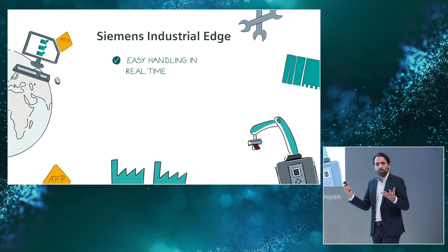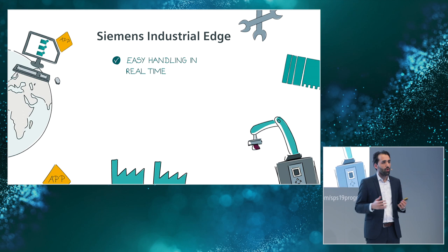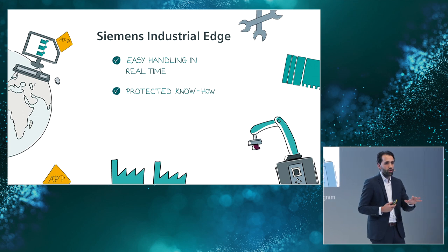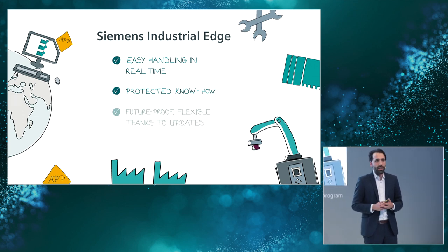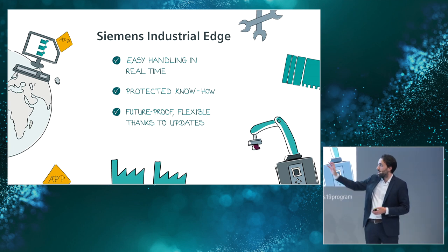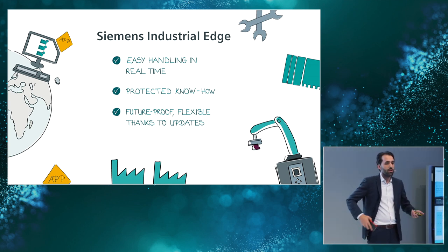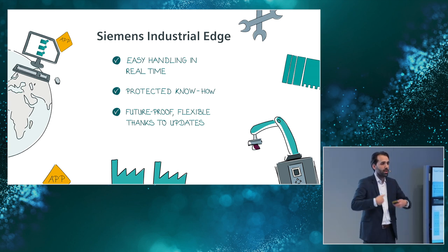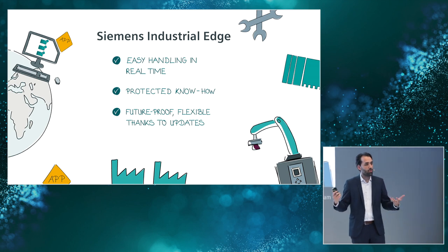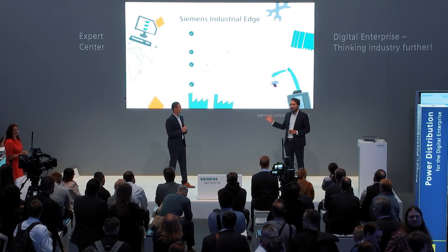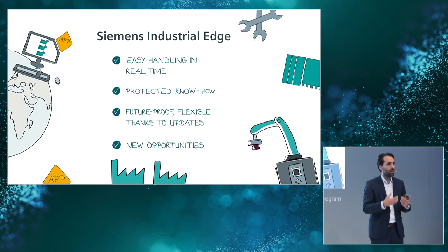Okay. So in the end, again, what are the benefits? With edge computing, we can now handle data very easily with apps in real time close to the process. The data itself, your know-how, stays securely on the shop floor level on the edge devices. And this is one of my important points here, which we have. We are now really future-proof because as you get in the evening updates from your smartphone, in industry, our machines will also be updated in a way more frequent way in the future. And this we can do with edge computing. And last but not least, because we can now implement IT into automation, we have a lot of new possibilities to analyze data, to do condition monitoring, predictive maintenance, and stuff like that.